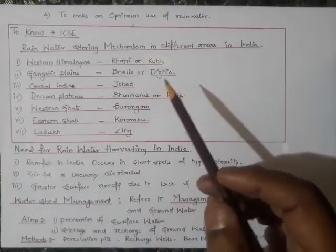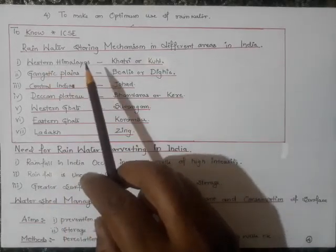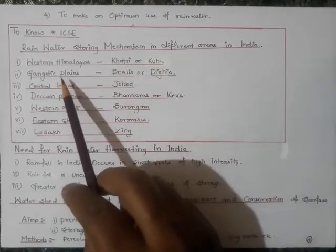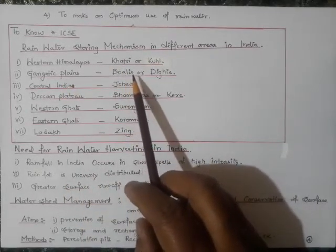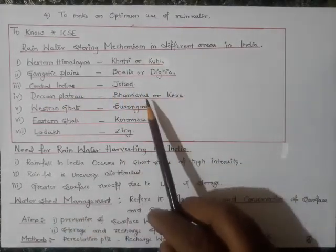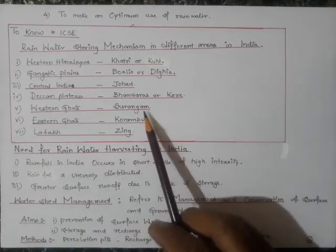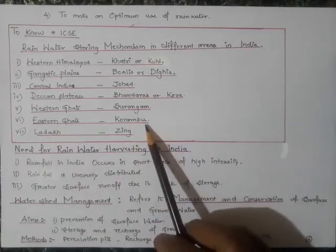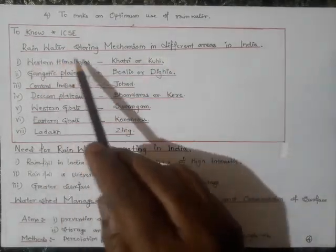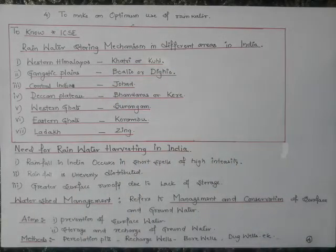Rainwater harvesting mechanisms have different names in different places in India. In the Western Himalayas it is called cool or katri; in the Gangetic Plains, bolis or diggis; in Central India, johad; in the Deccan Plateau, kere or bandharas; in the Western Ghats, surangam; in the Eastern Ghats, korumbu; and in Ladakh, zinc. There can be a board examination question on this.